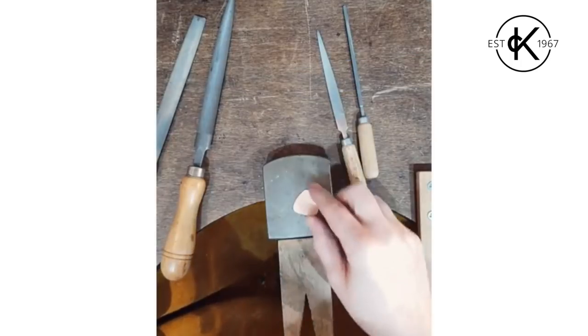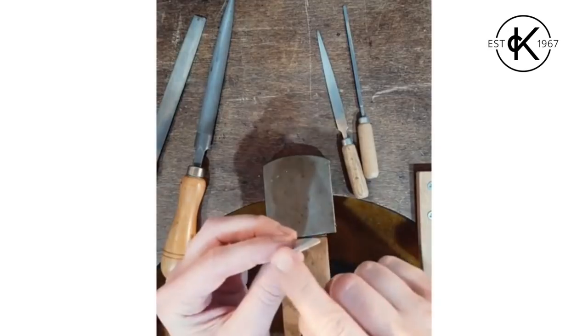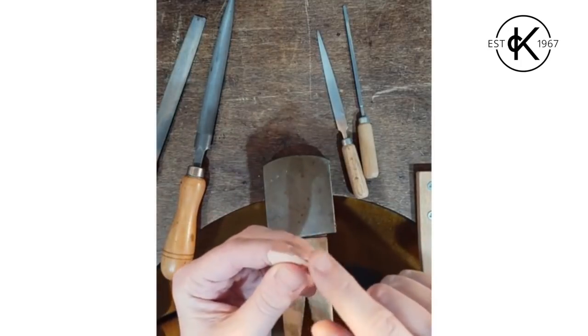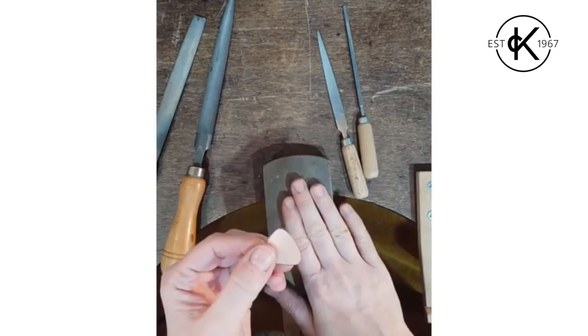The first thing I want to do is file my edges where I cut them with the shears. When you cut with shears you're always going to have a slightly raggedy effect and a very slight bevel, so I need to file that away.